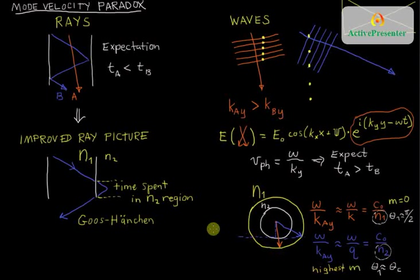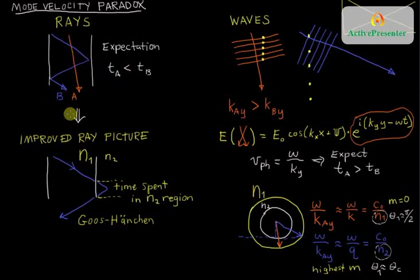So there really is no paradox. A careful treatment of the ray picture lets us recover the effect we already saw mathematically in the wave picture: the more the two crisscrossing plane waves are angled with respect to the walls — the closer they are to the critical angle — the faster the standing wave pattern drifts down the core of the waveguide. At the extremes, you experience just the cladding refractive index N2 versus just the core index N1. In the next tutorial, we will quantitatively discuss the speeds with which these modes propagate and, most importantly, the difference in their arrival times when they come out of a fiber.